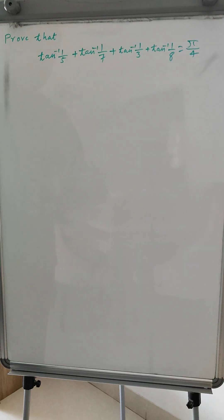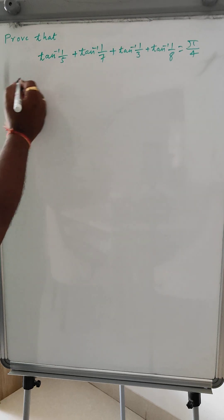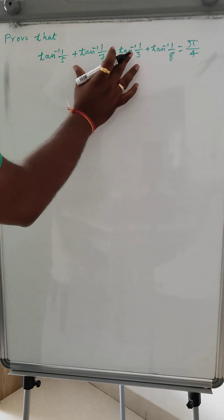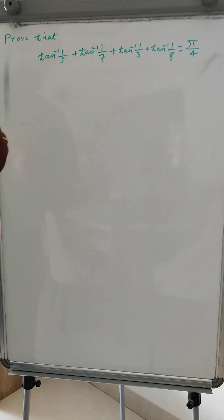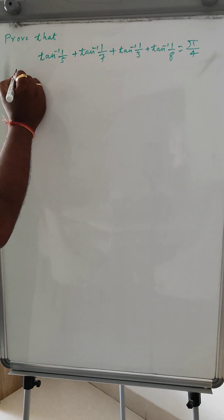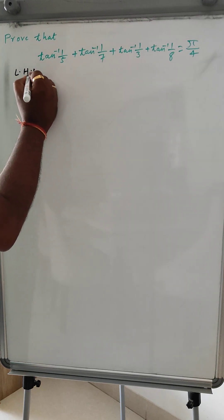Pi by 4 is nothing but 45 degrees. So this is LHS and this is RHS. From LHS we have to prove RHS is equal to. So LHS we have taken.